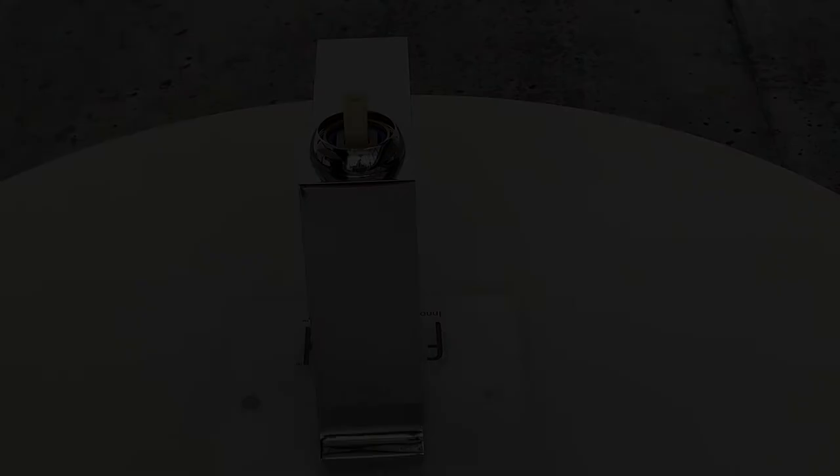Replace the decorative cap by hand tightening it. Now simply replace the handle. Check the alignment of the handle with the faucet body and tighten the set screw in a clockwise motion.